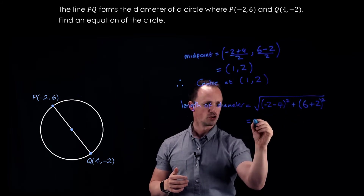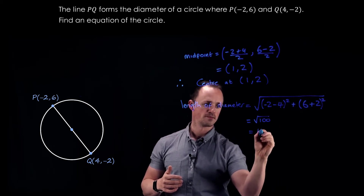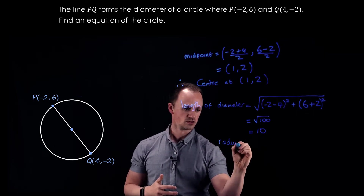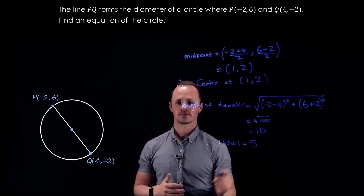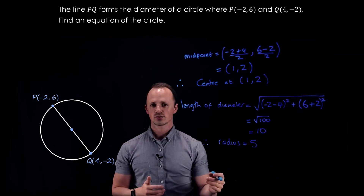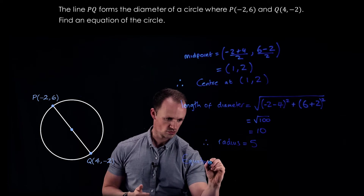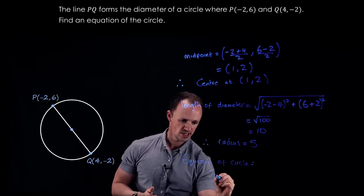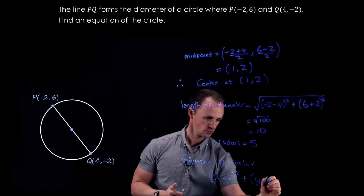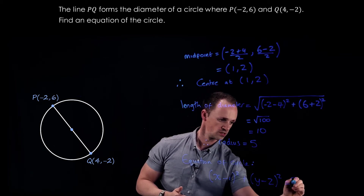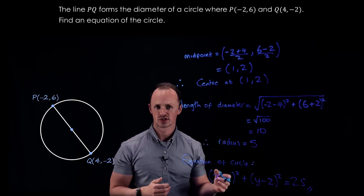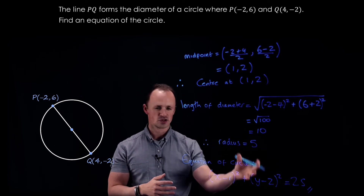Minus 2 minus 4 is minus 6, squared gives 36. 6 plus 2 squared is 64. So we get the square root of 36 plus 64, which is the square root of 100, which is 10. The diameter is 10, so the radius is 5. With center (1, 2) and radius 5, the equation of the circle is: (x minus 1) squared plus (y minus 2) squared equals 25. To recap: given two coordinates on the diameter, we find the center and radius and substitute into the circle equation.